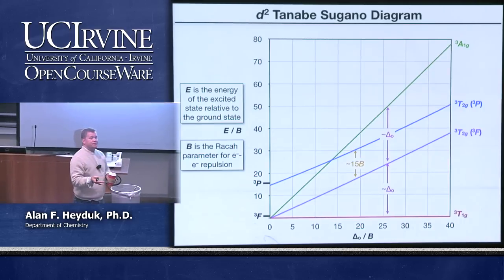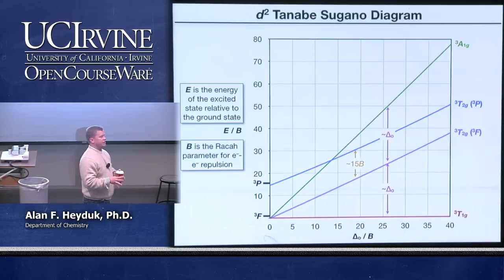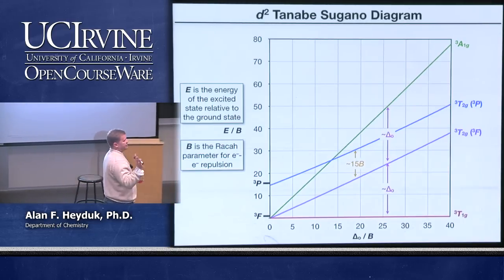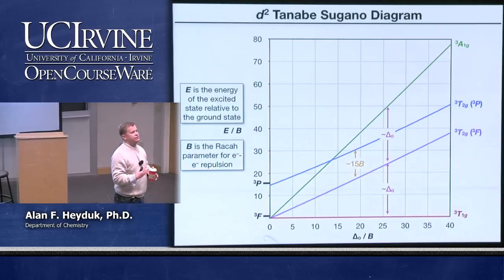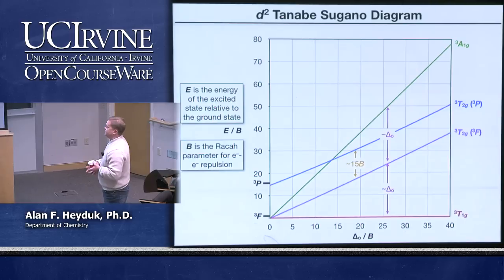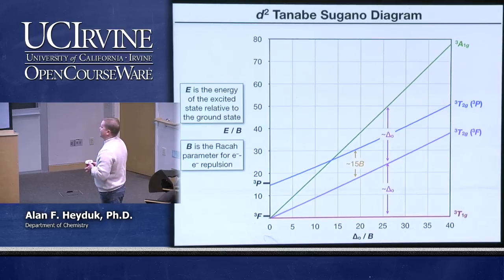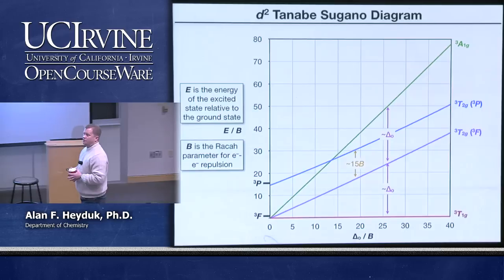To accommodate the fact that the basic diagram doesn't change but the magnitude of these energies does, you'll often see these state diagrams collected in what's known as a Tanabe-Sugano diagram. In the Tanabe-Sugano diagram, I'm only showing the triplet electronic states — I've gotten rid of all the singlet states because we know we can't see those spectroscopically since it requires a spin flip.